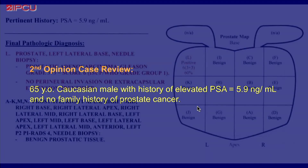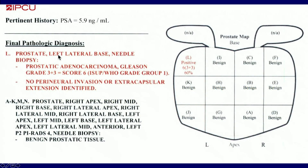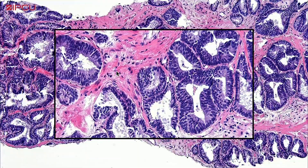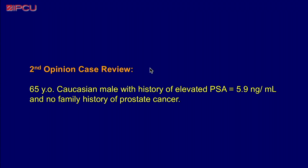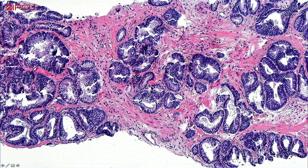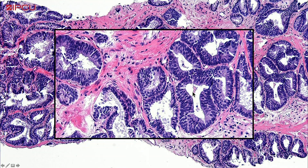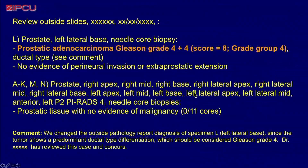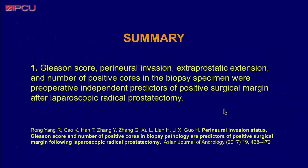Finally, this example just came to our practice for a second opinion a week ago. We had a small focus of 3+3, with a PSA of 5.9 ng/mL, in a 65-year-old Caucasian male with a large prostate. We reviewed it, and while we may be confused with individual glands resembling Gleason 3+3, this is actually a ductal adenocarcinoma — it's a 4+4. So from grade group 1, this patient was upgraded to grade group 4, with significant consequences for treatment.